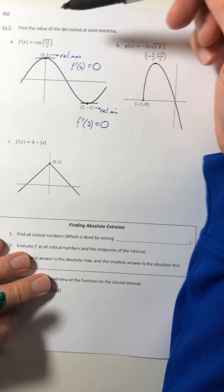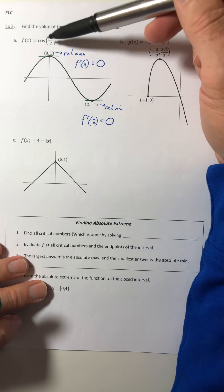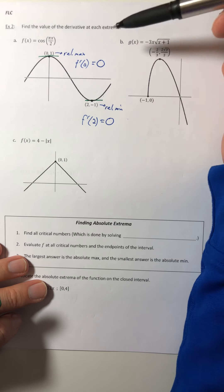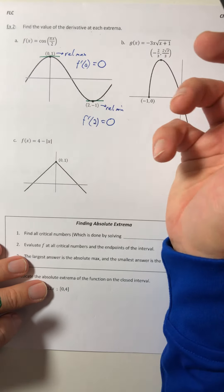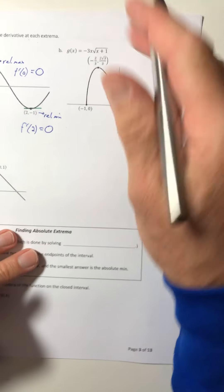What the book wants you to do is they want you to find the derivative, set it equal to zero, and then solve for x. Well, I already know they're extrema. They told us that. So let's just use it.